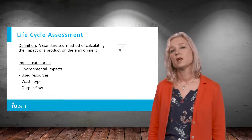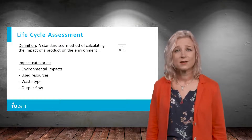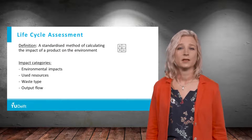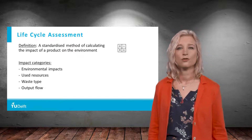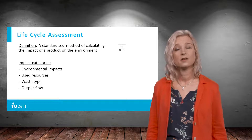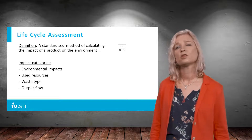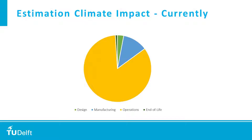So, if you would make a qualitative estimation of the climate impact in CO2 equivalent for each life cycle phase as it is today, the results would look roughly like this. Estimations of the operations phase impact on climate change range from 85% to 98% of the total life cycle impact.